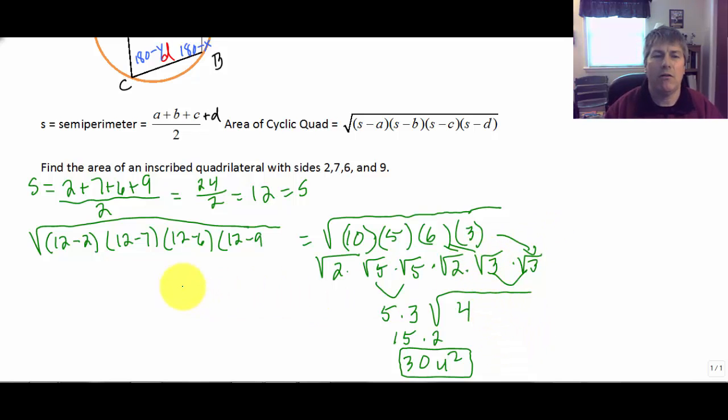And that does work out. Double checking my work. I can see here that the square root of 10 times 5 times 6 times 3 is the square root of 50 times 6. Well this is going to be easier. 5 times 6 is 30. Times 3 is 90. Times 10 is 900. 900 is a perfect square. So we get 30 units squared again.